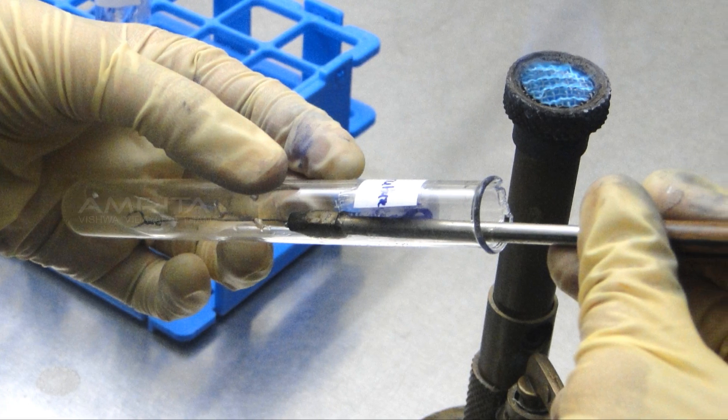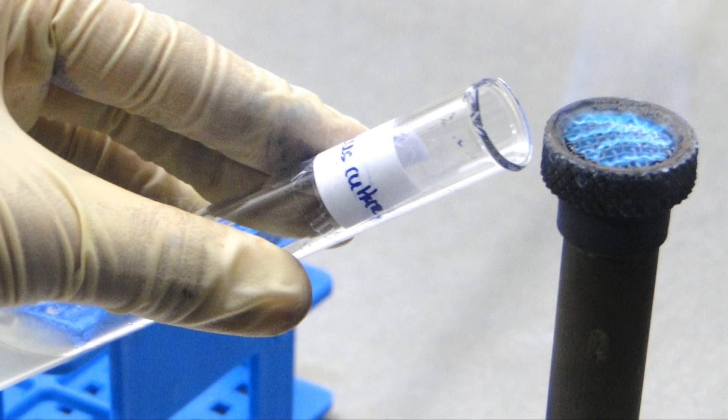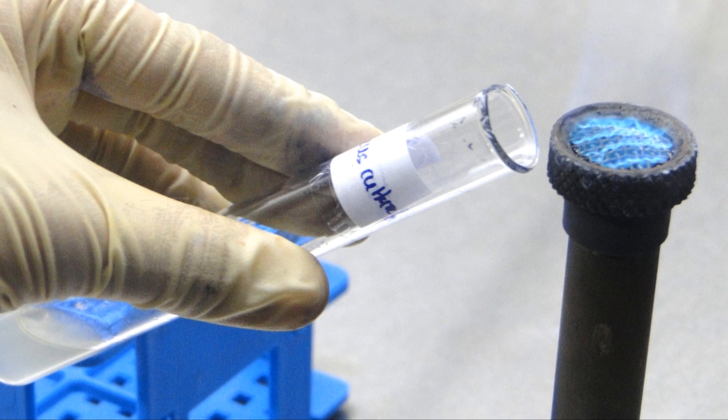Using aseptic technique, take a loopful of culture from the TSB tube with the needle. Again, flame the neck of the tube, cap it back, and replace the tube in the test tube rack.